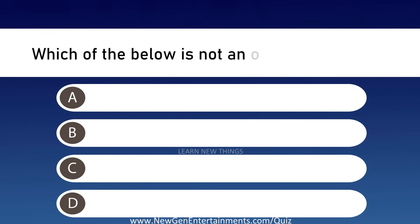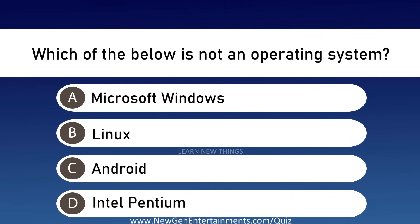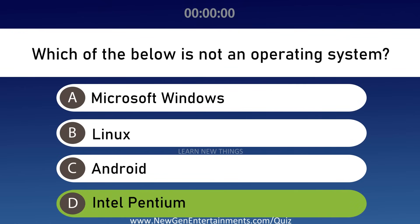Which of the below is not an operating system? Options are A: Microsoft Windows, B: Linux, C: Android, and D: Intel Pentium. Answer is Option D, Intel Pentium.